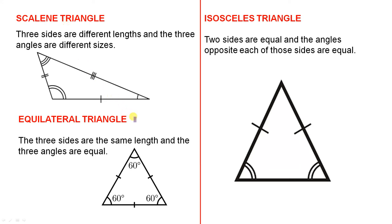With the equilateral triangle, the three sides are the same length and the three angles are equal. You've got one stroke, one stroke, and one stroke — meaning all the sides are equal. This leads to the fact that all the angles are equal and they must be 60 degrees, because three times 60 degrees gives you 180 degrees.